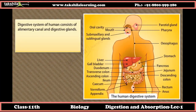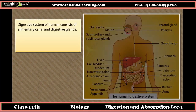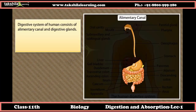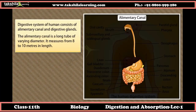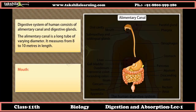The digestive system of a human consists of the alimentary canal and digestive glands. The alimentary canal is a long tube of varying diameter, measuring from 8 to 10 meters in length.